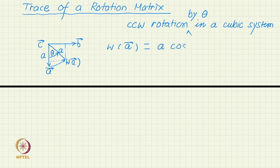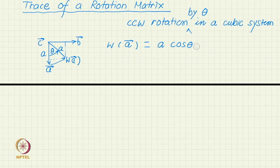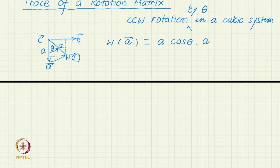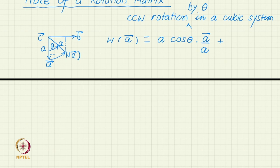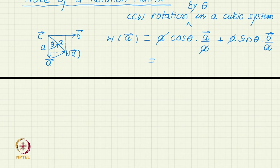W(A). A cos theta is the length times the unit vector in the A direction. What will that be? A by A. And similarly the B component is A sin theta times the unit vector along B which is again B by A because length is same, length of A and B is the same. This is cos theta times A plus sin theta times B.